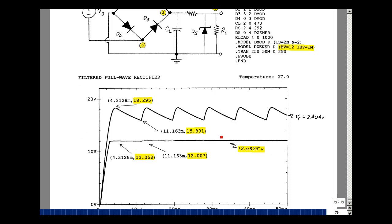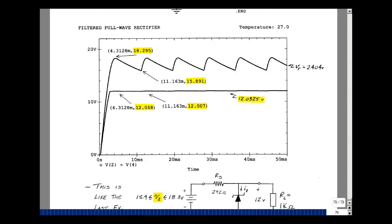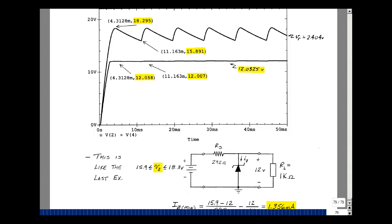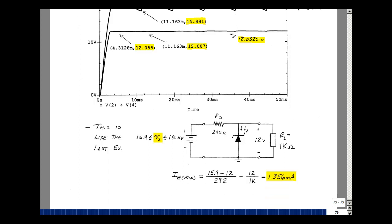Let's check the current in the Zener diode, see whether the minimum is enough to keep our Zener operating at 12 volts. This is like the last example we did with the CD player. If you think about the ripple in the power supply as being a range of values of the output voltage from the filter capacitor, we're going from 15.9 to 18.3. Let's even calculate the minimum current in the Zener diode.